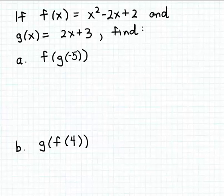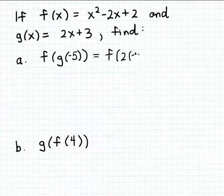Let's start by evaluating g of minus five. We evaluate g of minus five by using the formula for g. So g of minus five is going to be two times minus five plus three. We evaluate g of minus five by substituting minus five for the input variable x in the function formula for g.